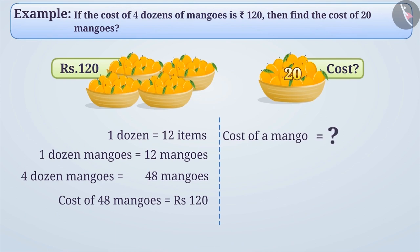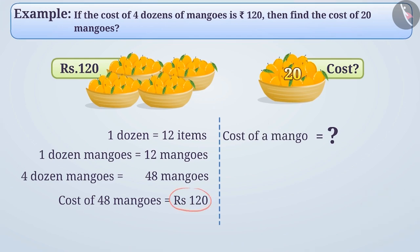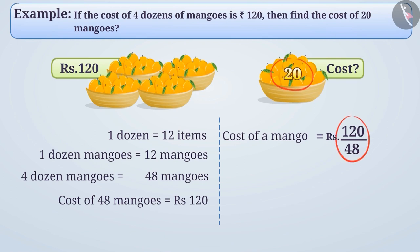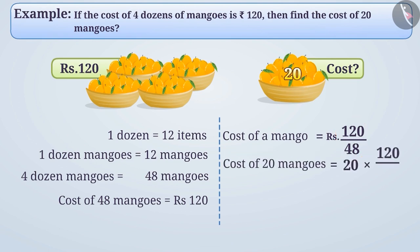Now, how do we find the cost of one mango? To find the cost of one mango, we have to divide rupees 120 by 48. Cost of one mango is equal to rupees 120 divided by 48. Since we need to find the cost price of 20 mangoes, we multiply 20 with the cost of one mango. Therefore, cost of 20 mangoes is equal to 20 into 120 by 48. By solving this, we get the cost price of 20 mangoes, that is rupees 50. In this way, we can solve such questions easily with the correct use of unitary method.